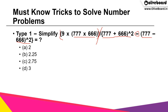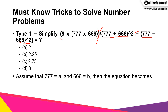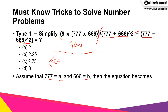Look at this question and see if you can figure out the way to solve it. Let us proceed. First, assume that 777 is 'a' and 666 is 'b'. We do this because we want to simplify the whole mathematical equation — make it simpler. Once you do this, your equation becomes 9ab in the numerator, divided by (a + b)² minus (a − b)².